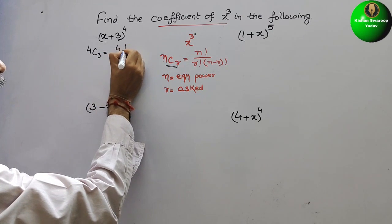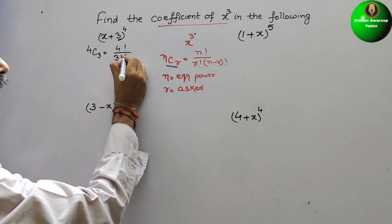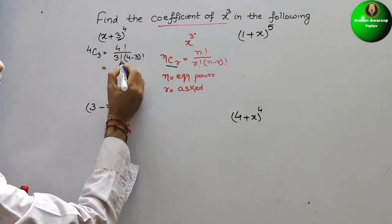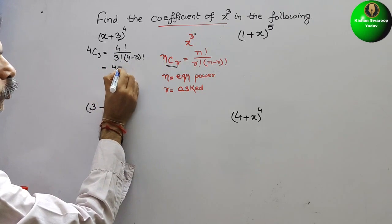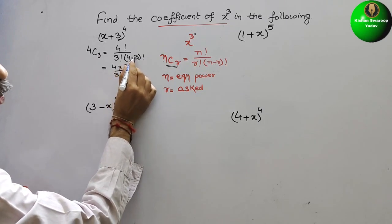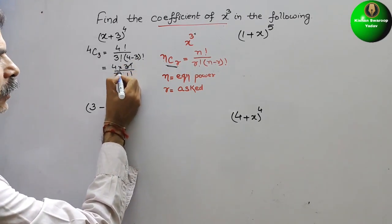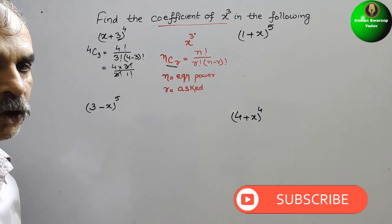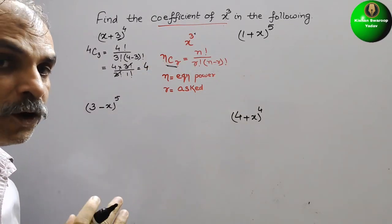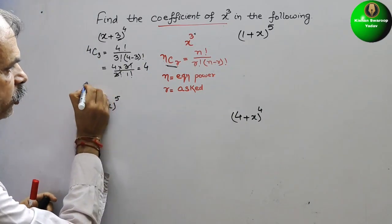That is equal to 4 factorial by R is 3 factorial, then 4 minus 3 factorial. That is equal to 4 factorial, that means 4 into 3 factorial, by 3 factorial into 4 minus 3 is 1 factorial. So now 3 factorial cancels out. 1 factorial is nothing but 1, that is equal to 4. So 4 is the initial coefficient.